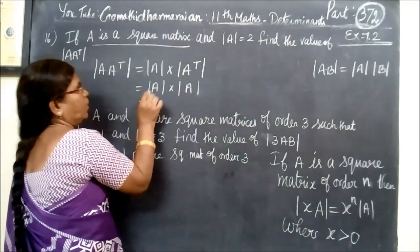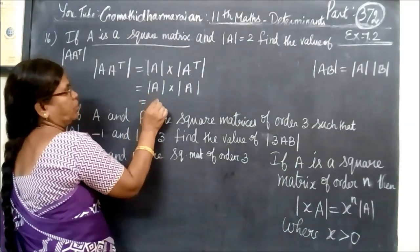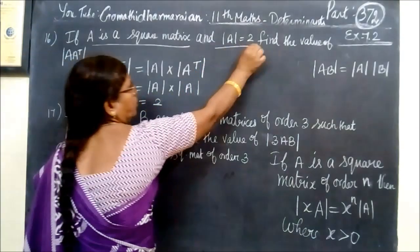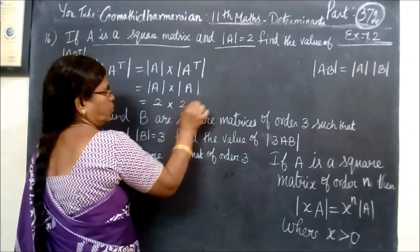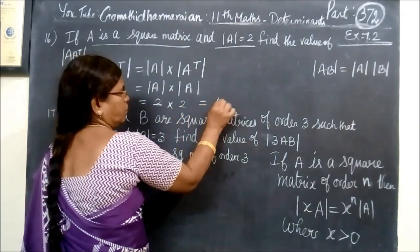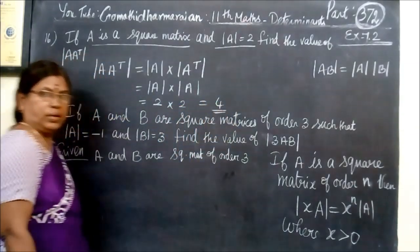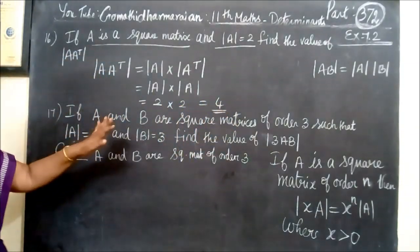You have to substitute the value. You have to put the value in — it is already 2. So, 2 into 2 is equal to 4. So, this is the answer.